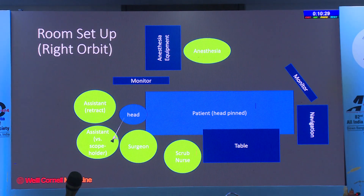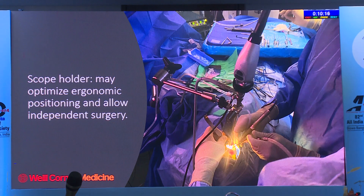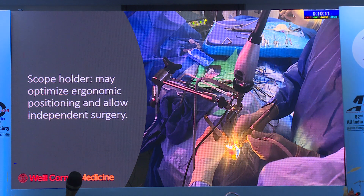Our basic setup is the surgeon stands on the operative side. We typically utilize a scope holder—either an assistant or a mechanical scope holder—and an assistant to retract the orbit. The equipment is positioned to the side with anesthesia across on the other side.